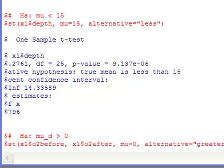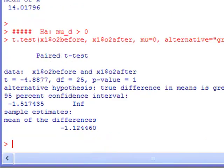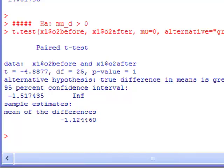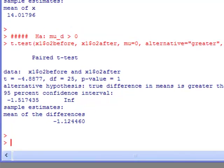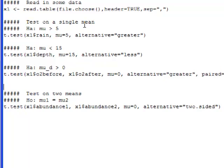And notice I have a t-value that's negative 4.887, degrees of freedom of 25, and it says a p-value of one. It says the alternative hypothesis: the true difference in means is greater than zero. And in this case, I would not conclude that the true difference is greater than zero because the p-value is so large.